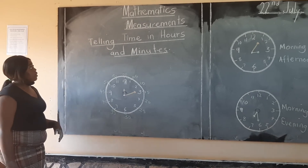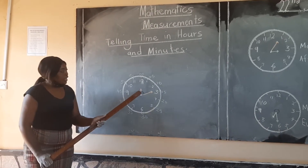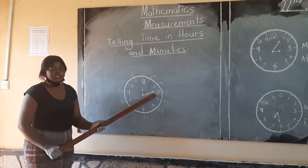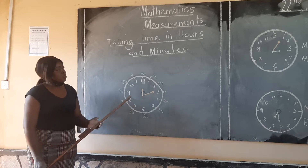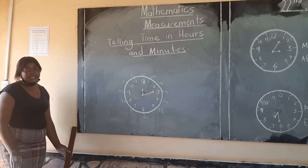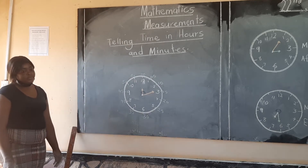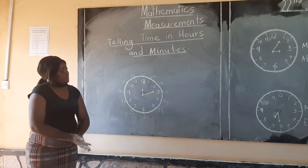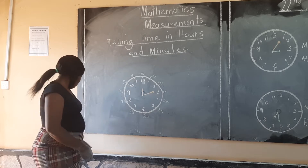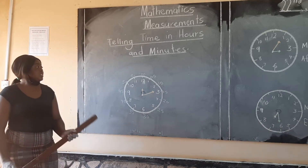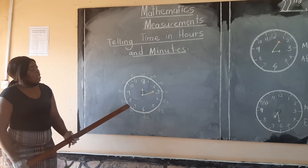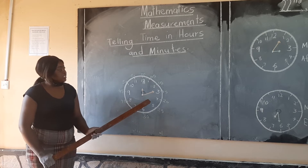So we're telling time in hours and minutes. The short hand is the hour hand and the long hand is the minute hand. We're going to look at our clock here. Can you tell us what time it is? If we look at our short hand, it is pointing at 12 and our long hand is pointing at 3.